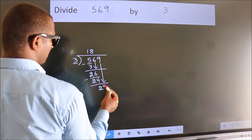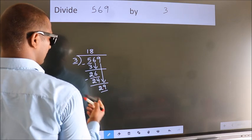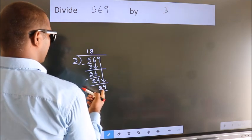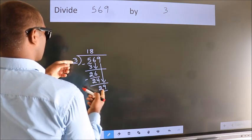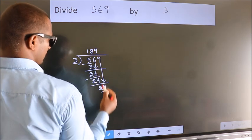So, 9 down. So, 29. A number close to 29 in 3 table is 3 9 27.